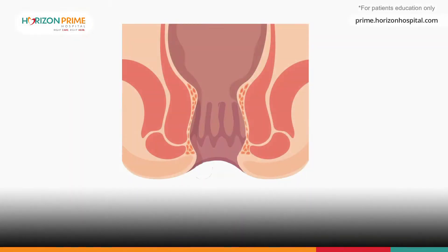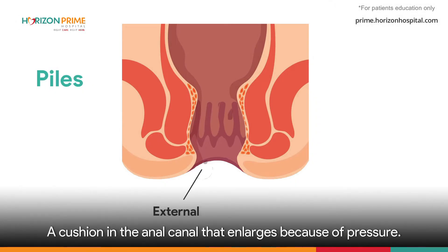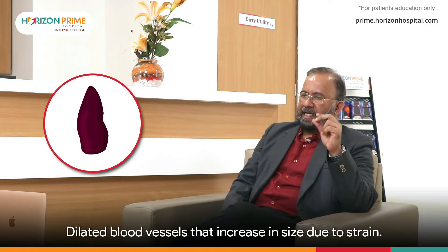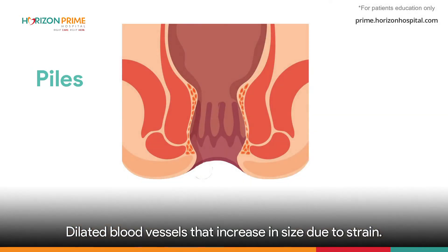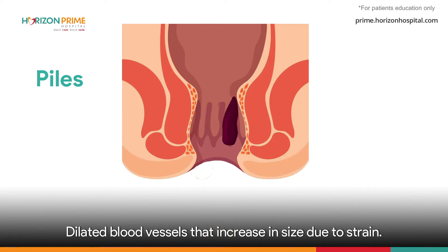What is piles? Piles is nothing but cushions in the anal canal which start enlarging because of increased pressure applied while passing stools. What does piles contain? It contains nothing but dilated blood vessels. These blood vessels start increasing in size when the patient is passing stools or motion — they start straining and the piles start coming out. Once they come out, the patient realizes something is wrong and needs to consult a doctor.